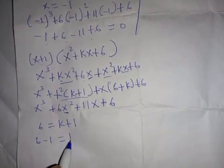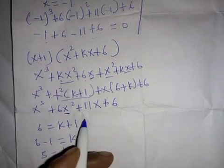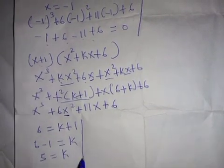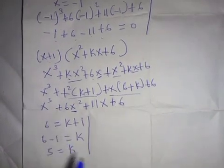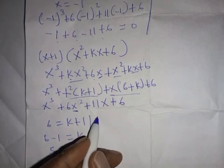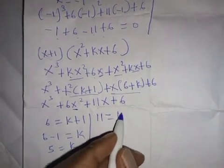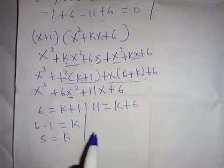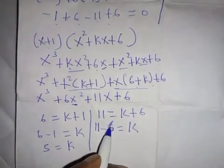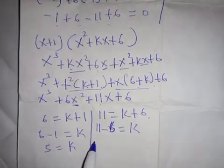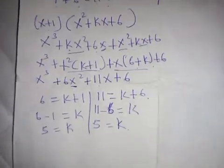Alternatively, we can compare the coefficient of x: eleven equals k plus six, so eleven minus six equals five, therefore k equals five. Either way, we obtain the same value of k, which is five.